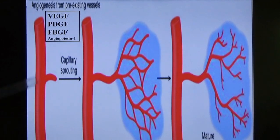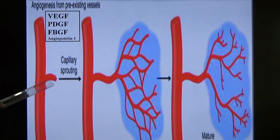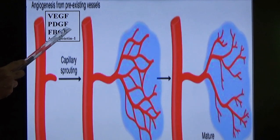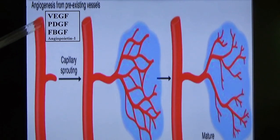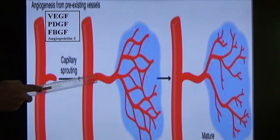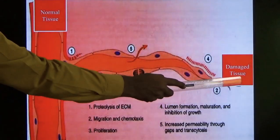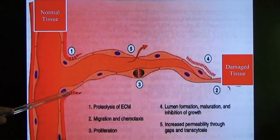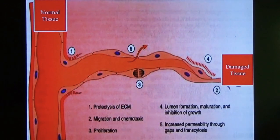These growth factors cause nearby blood vessels to sprout. The endothelial cells migrate and proliferate, forming different branches. Nearby normal blood vessels sprout toward the damaged tissue. The endothelial cells migrate and proliferate to form new blood vessel branches. That is angiogenesis.